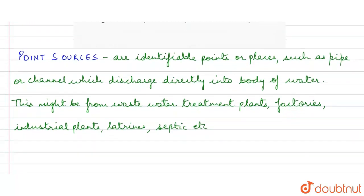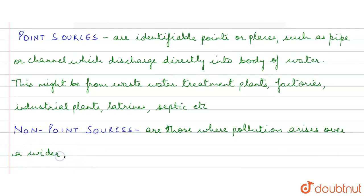Non-point sources are those where pollution arises over a wider area. It arises over a wider area, and it is often difficult to locate the exact place of origin.